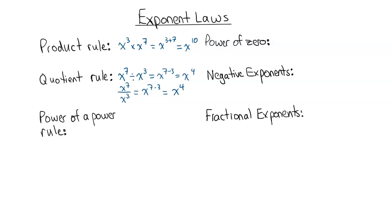The next one is the power of a power rule. A couple of examples: the first one — let's write out two X to the power of two, all to the power of three. The power of a power rule says that this three gets multiplied times whatever powers are in the brackets. There's also a power of one on the two, so we need to remember to multiply that one times three and the two times three. This becomes two to the power of three times X to the power of six, which we can write as eight times X to the sixth, because two to the power of three is eight.